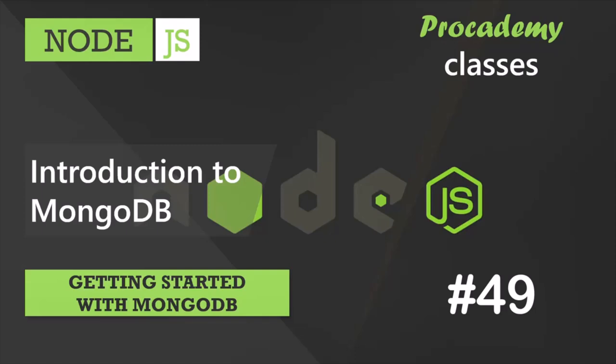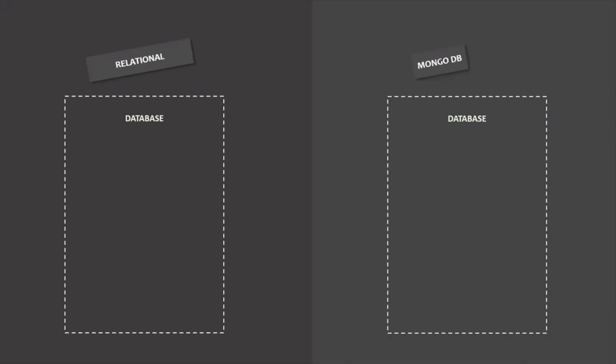Let's start this section by understanding what MongoDB is, its features, and how it is different from traditional database solutions. To understand MongoDB, we are going to compare it with more traditional database solutions like MS SQL, MySQL, or Oracle, which are also called relational databases. In a relational database, we have a database at the top. In MongoDB also, we have a database at the top. MongoDB is a so-called NoSQL database solution.